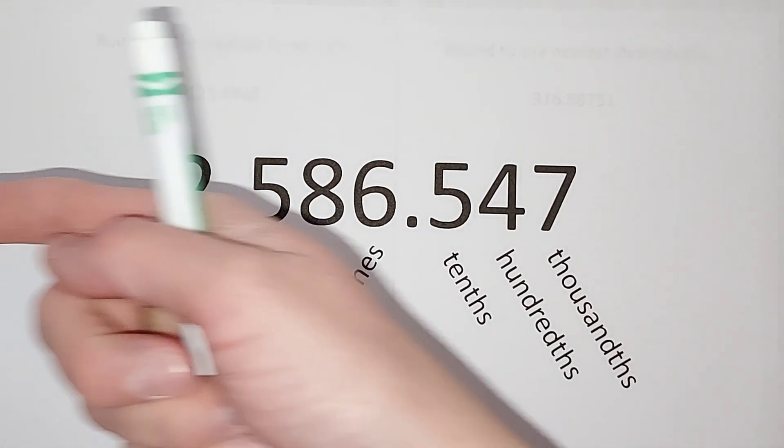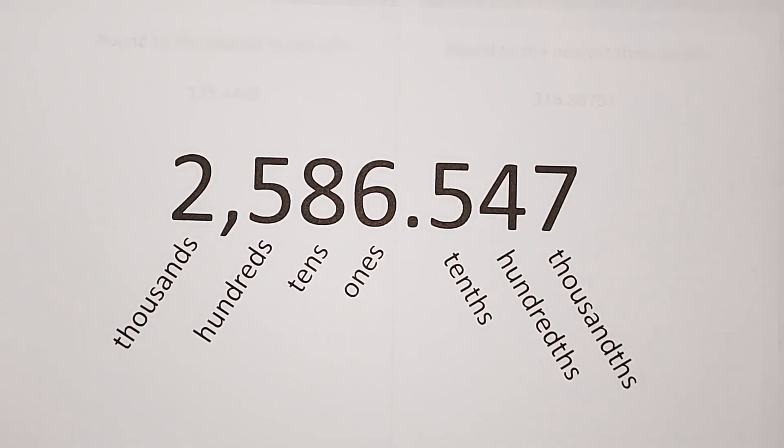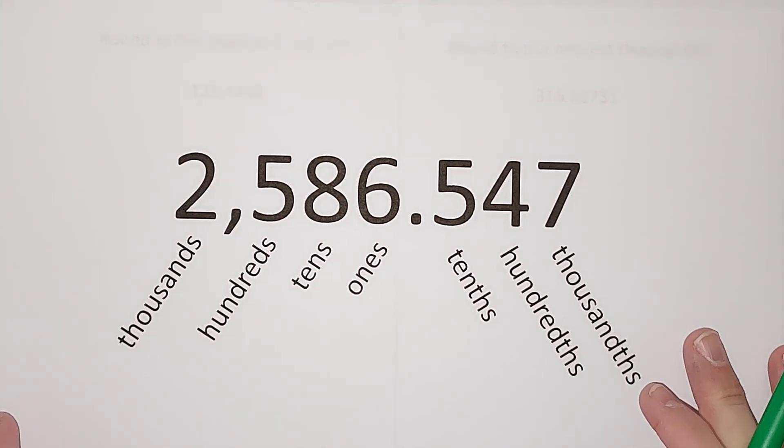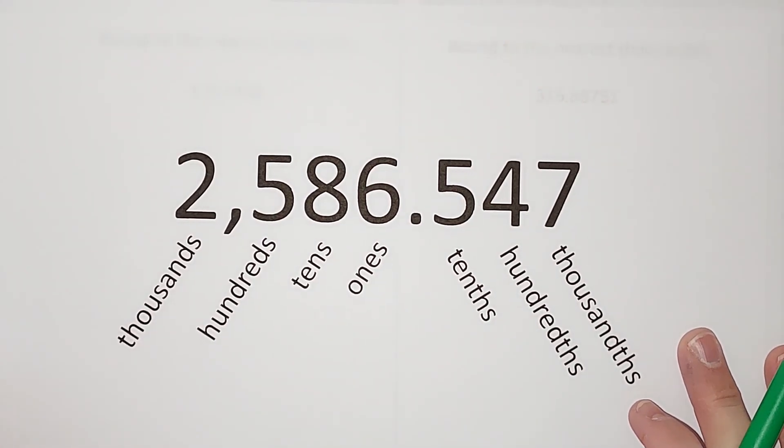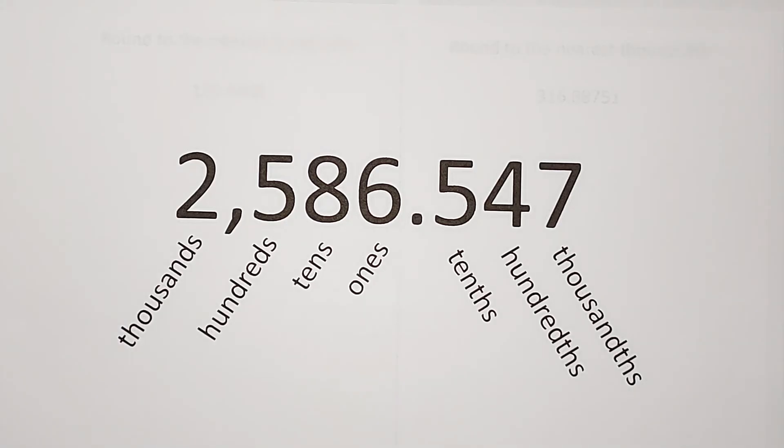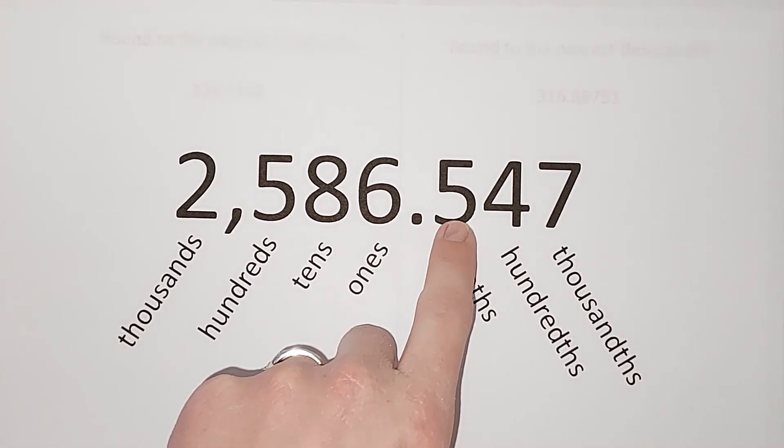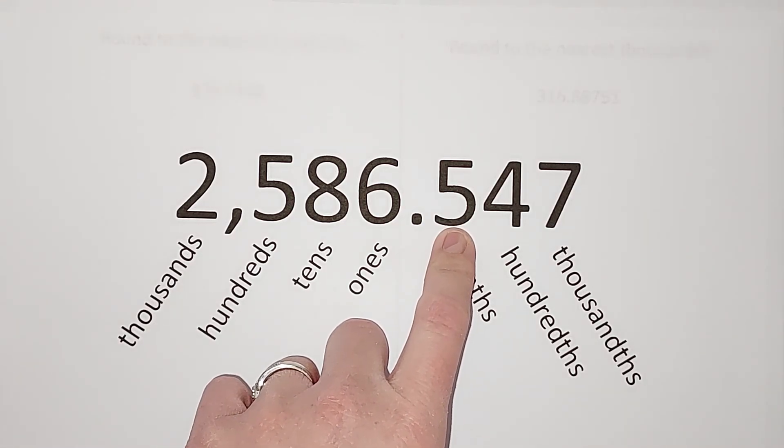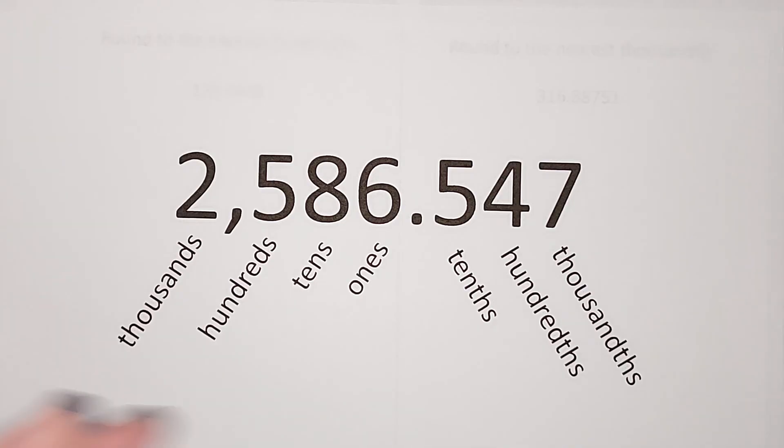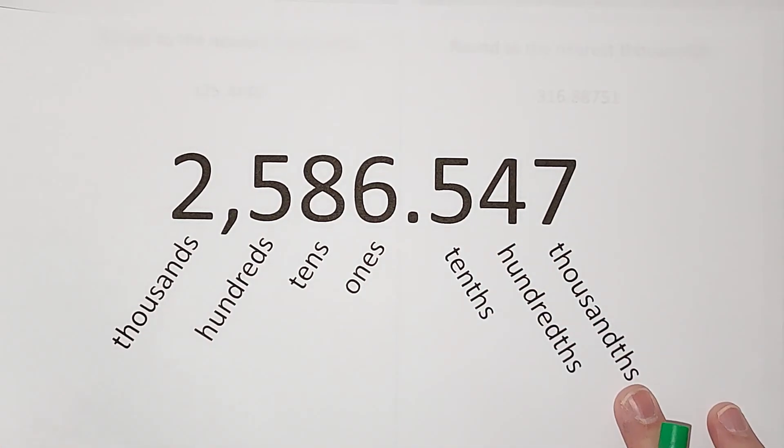Okay, so one way that helps me remember is that the tenths is one spot after the decimal. I think 10 has one zero and so this is one place after the decimal. Hundreds has two zeros so it's two places after.